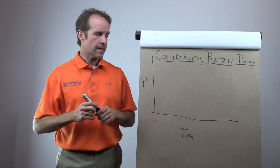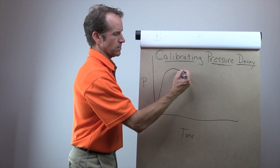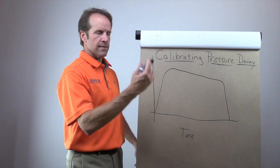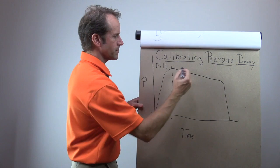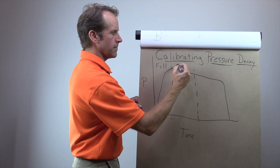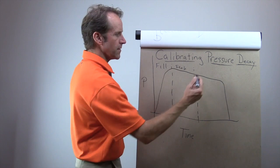You pressurize the part. And over the course of time, that is a typical test curve. Maybe it's a little steep on the pressure loss, but you get the idea. So this is going to be our fill time. This is going to be our stabilization timer. This is going to be our test timer.